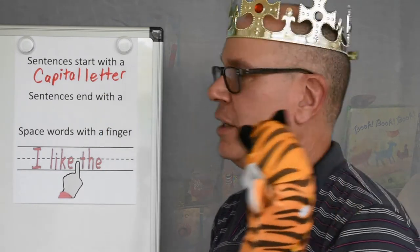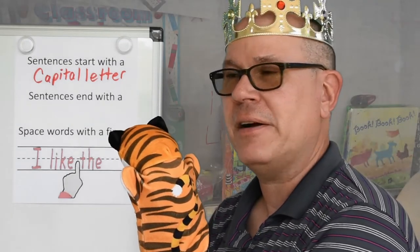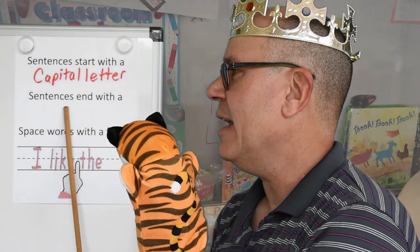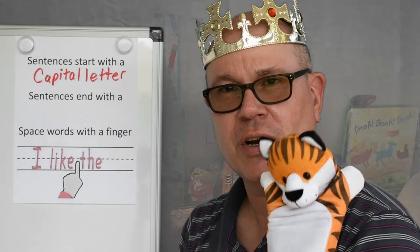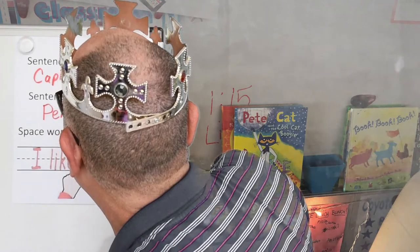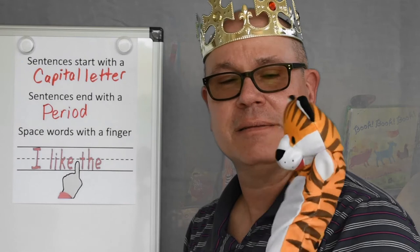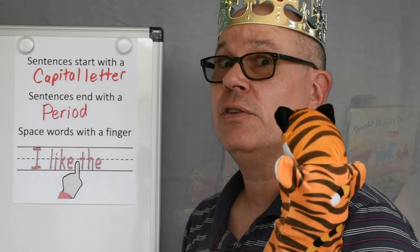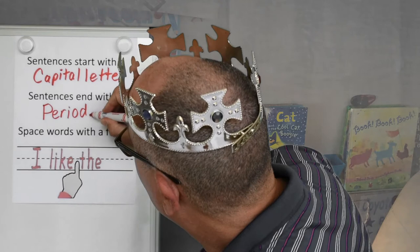So what's next? Let's take a look. Sentences end with A... Want to try that again, Terry? Sentences end with A. What do you think it ends with? I'm not sure. How about you, boys and girls? It ends with a period. What does a period look like, Mr. Fred? Do you know what it looks like? Yeah, boys and girls, what does it look like? It looks like a dot. There we go.